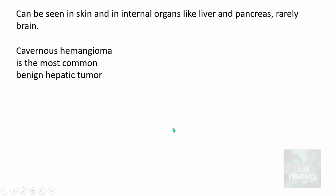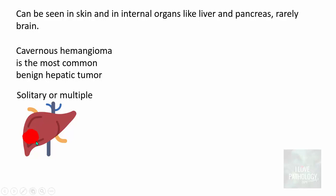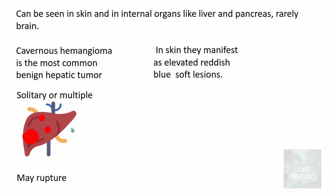In around 15 to 20 percent of autopsy cases you can find hemangiomas. These hemangiomas in the liver can be either solitary or multiple. The complication of cavernous hemangioma: most often they are asymptomatic, but they can rupture and result in various complications. In the skin they manifest as elevated reddish-blue soft lesions.